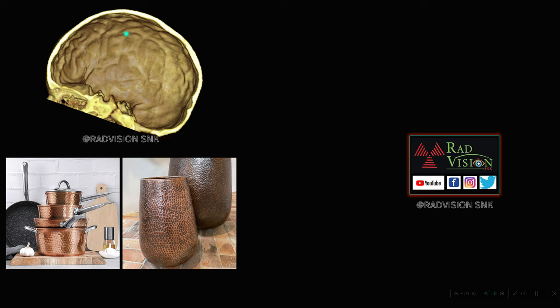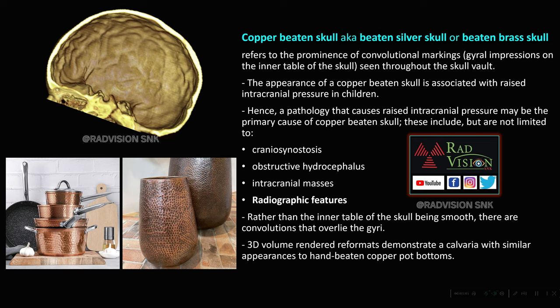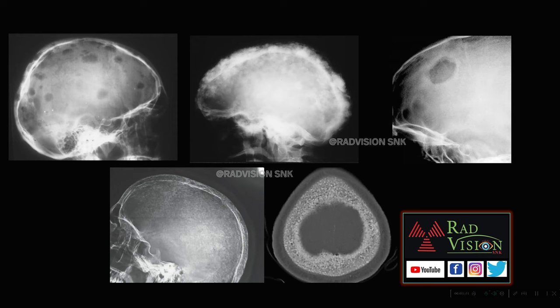This compression creates impressions on the inner surface of the skull, giving the copper beaten appearance — also called copper beaten skull, silver beaten skull, or beaten brass skull. It is classically seen in raised intracranial pressure in children and may occur in craniosynostosis, obstructive hydrocephalus, or intracranial masses. Always do 3D volume rendering to better demonstrate this appearance.